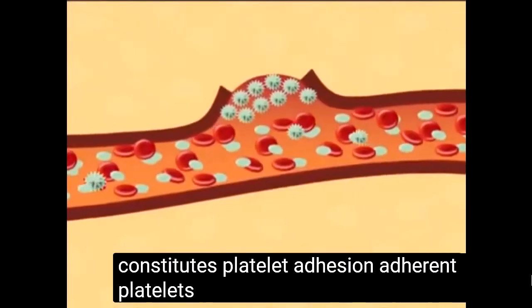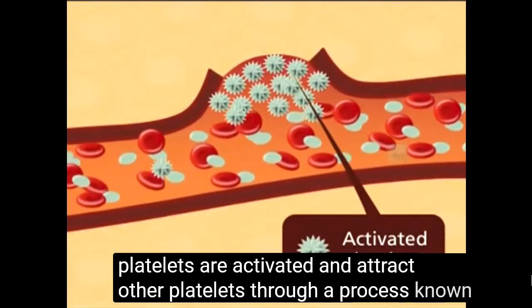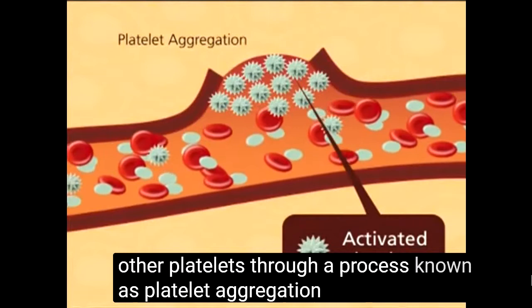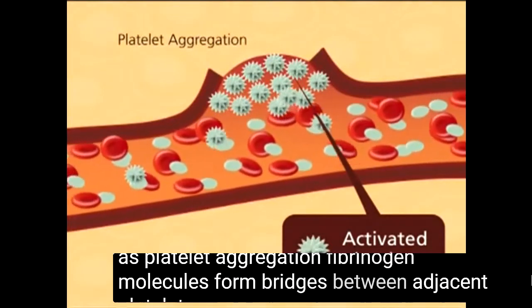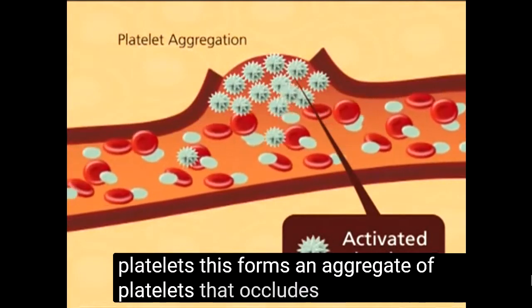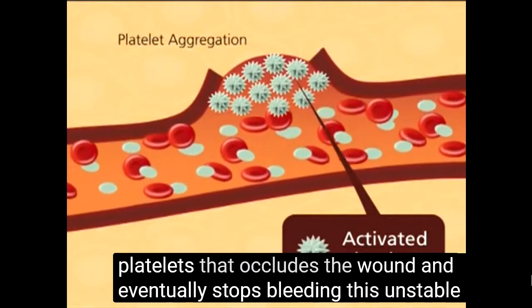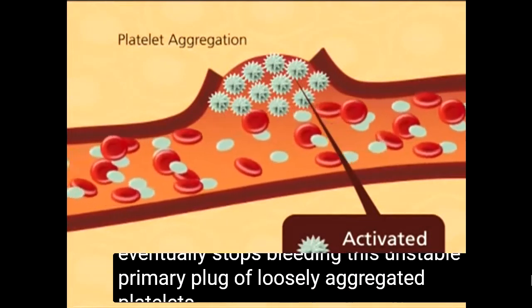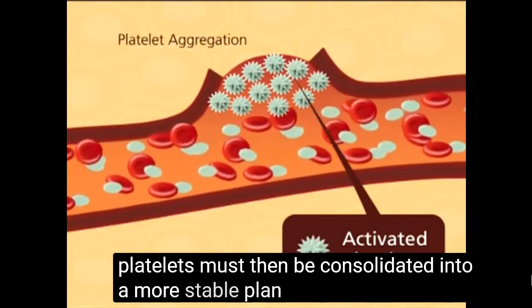Adherent platelets are activated and attract other platelets through a process known as platelet aggregation. Fibrinogen molecules form bridges between adjacent platelets. This forms an aggregate of platelets that occludes the wound and eventually stops bleeding. This unstable primary plug of loosely aggregated platelets must then be consolidated into a more stable plug.